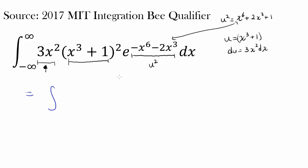Let's try to make that substitution. We have to change the bounds correspondingly, but in this case the bounds are going to stay the same. When x is approaching negative infinity, u = x³+1 is also going to approach negative infinity. And the same reasoning applies for x approaching positive infinity — u approaches positive infinity.